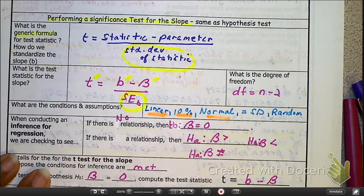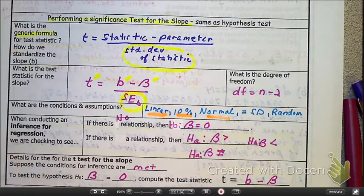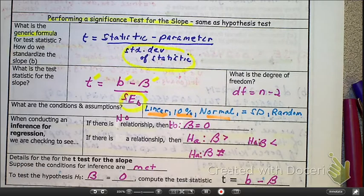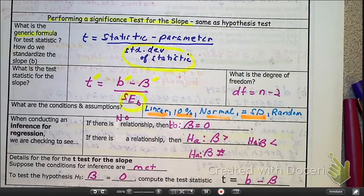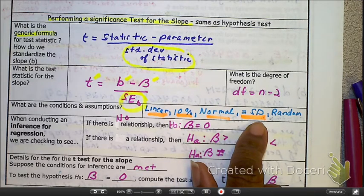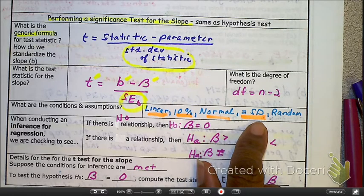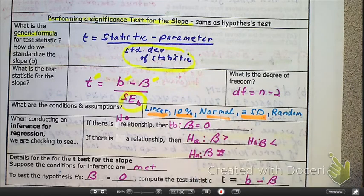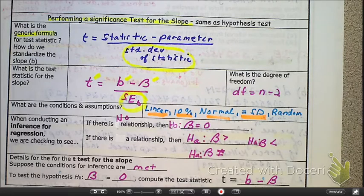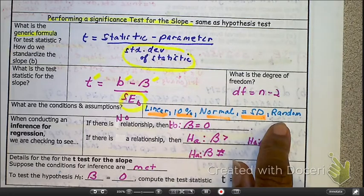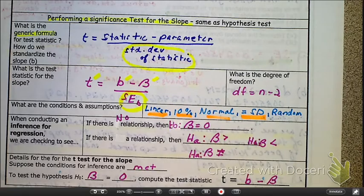Normality. Normality is a little tricky. We want to see if the response variable, the output, is approximately normal. Next, checking the standard deviation, making sure that they are equal standard deviation when it comes to the response variable again. In other words, we're checking to see if your values of y are going to be the same for all the values of x.